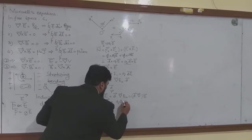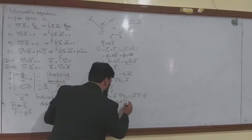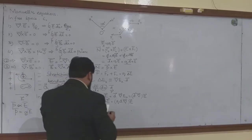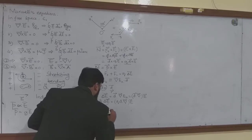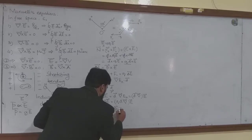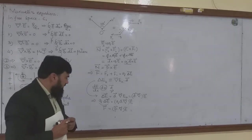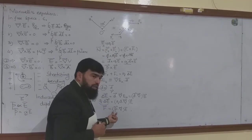If I multiply this by Q, then Q times delta E is equal to Q times D dot del, which gives Q D dot del E. I can write this as the force F, because this is P dot del operating on E. So I have written the force — which was simply F = QE — now expressed in terms of the dipole moment P as F = (P·∇)E.